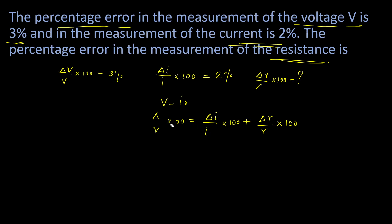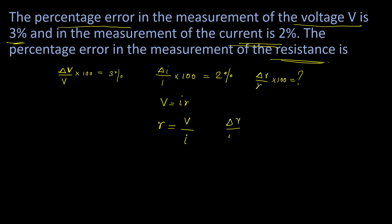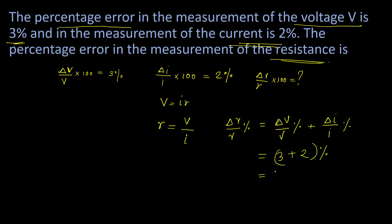From V equals IR, we get R equals V upon I. The percentage error in R is (delta V/V)×100 plus (delta I/I)×100 equals 3% plus 2% equals 5%. So the percentage error in measurement of resistance is 5%.